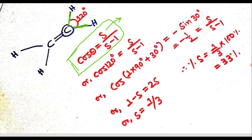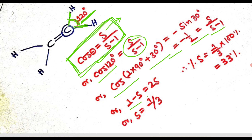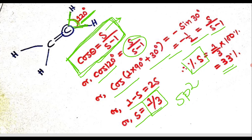From this bond angle we can determine the S character. We put θ = 120° into the formula: cos 120° = S / (S − 1). By simple trigonometric calculation we get S = 1/3. So the percentage S character equals 1/3 × 100% = 33%.